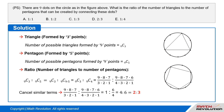We can cancel out the similar terms in the two sides of the ratio. (9 times 8 times 7) over (3 times 2 times 1) to (9 times 8 times 7 times 6) over (4 times 3 times 2 times 1), which becomes 1 to 6 over 4, which equals 4 to 6, which simplifies to 2 to 3.